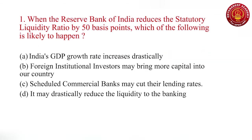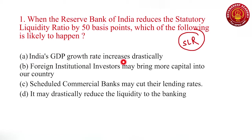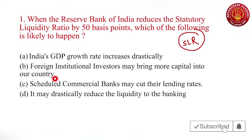First question: when the Reserve Bank of India reduces the statutory liquidity ratio, which is also called SLR, by 50 basis points, which of the following is likely to happen? Option one: India's GDP growth rate increases drastically. Option two: Foreign institutional investors may bring more capital into our country. Option three: Scheduled commercial banks may cut their lending rates. Option four: It may drastically reduce the liquidity to the banking.